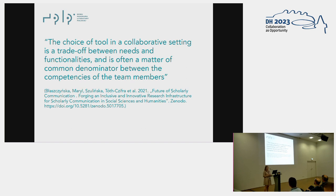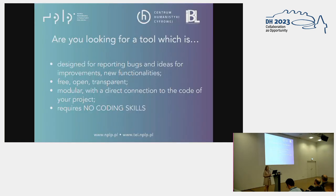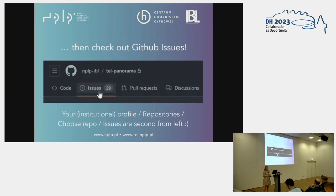Thus we might find solutions and tools that could be used for communication between these two groups with sometimes radically various competencies. The key question is: which tool should we choose? Do you need a tool for reporting bugs, talking about new ideas for improvements and new functionalities? This tool should also be free, open, transparent, shareable with the internet, modular, with direct connection to the code of your project, and requiring no coding skills. We've got one — and this is GitHub Issues.